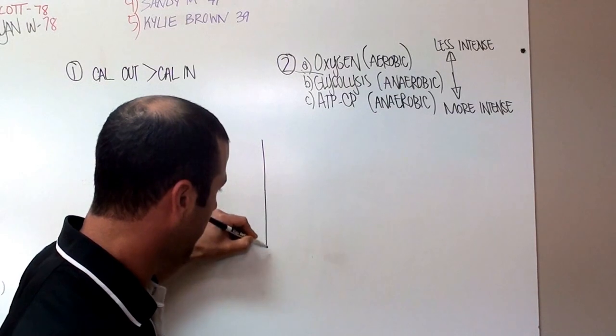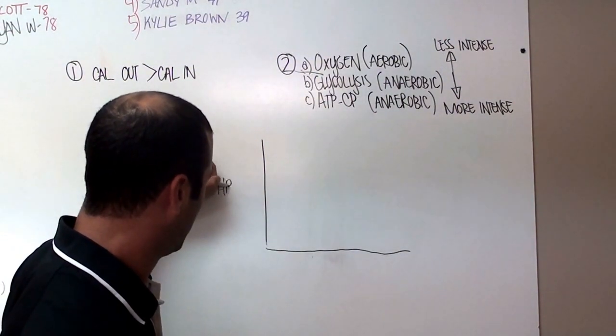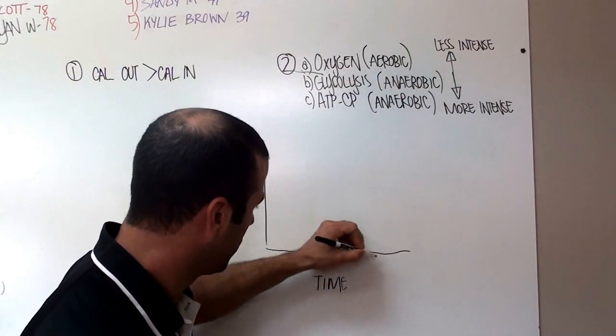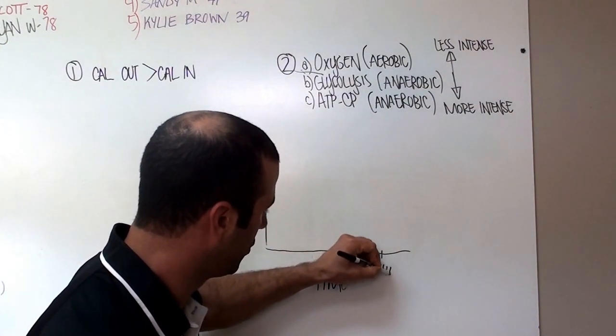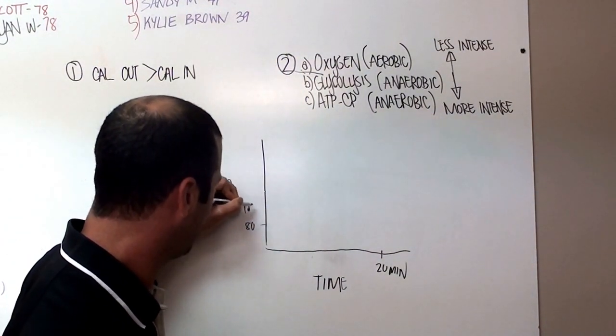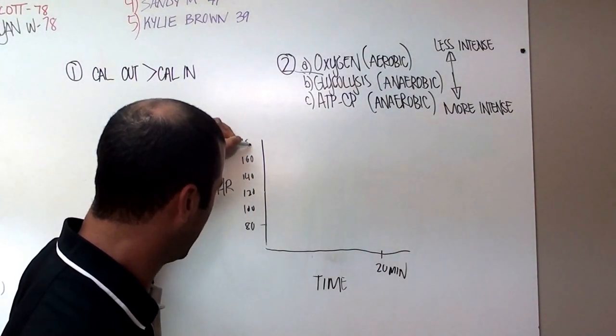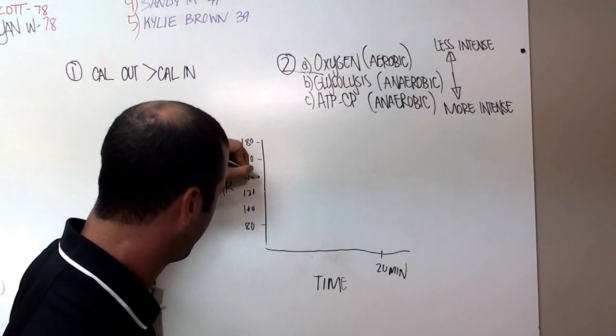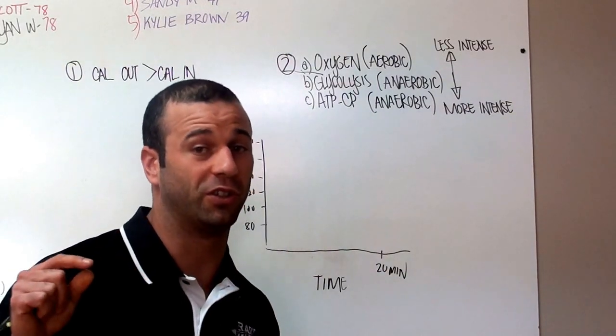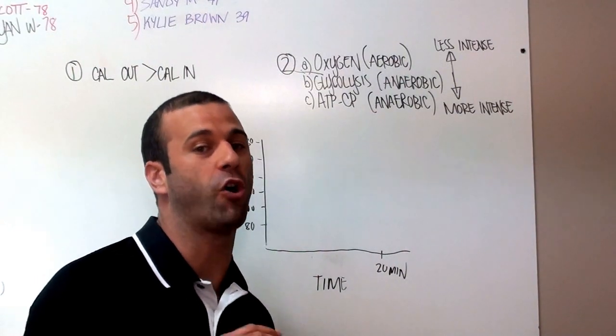I'll make a little chart right here. We're going to call this heart rate and here, call this time. Say that's 20 minutes and then we'll do 80, 100, 120, 140, 160, 180.